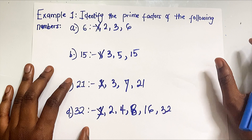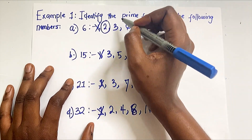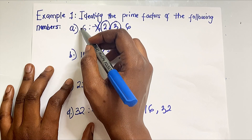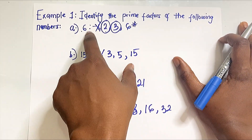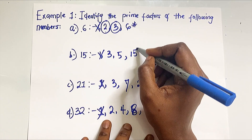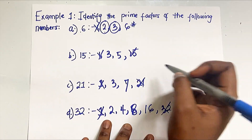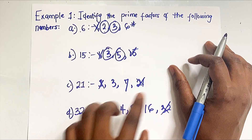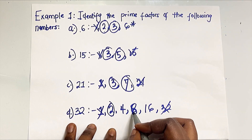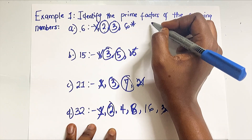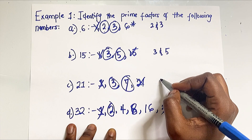When solving these questions, people often omit 1 because 1 is not a prime number. However, 2 is a prime number and 3 is a prime number, so 2 and 3 are prime factors of 6. Note that the last value — the number itself — cannot be a prime factor because all the other factors divide into it. For 32, 4 is not prime, 8 is not prime, and 16 is not prime. So the prime factors of 6 are 2 and 3, the prime factors of 15 are 3 and 5, the prime factors of 21 are 3 and 7, and the prime factor of 32 is just 2.